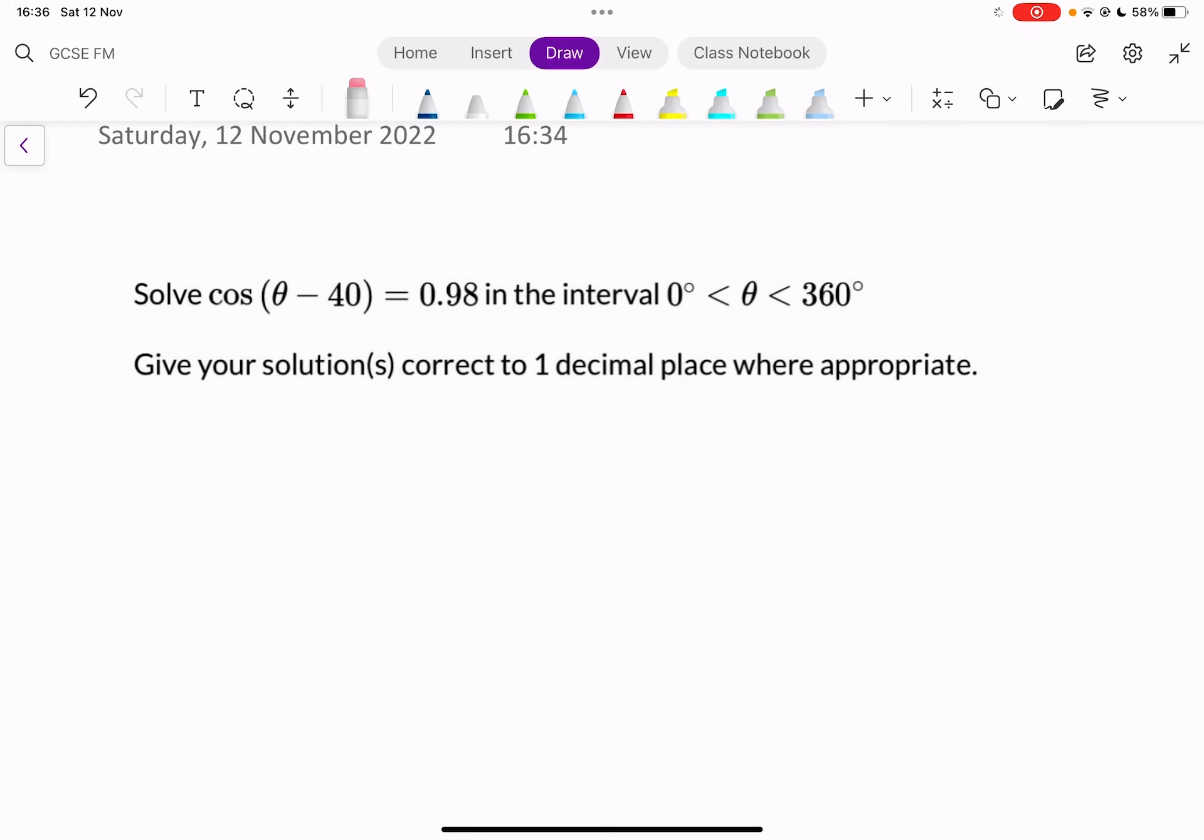So what we do here, first thing we've got to do is write down our equation. It was cos of theta minus 40 is equal to 0.98 and it was on 0 is less than theta is less than 360 degrees.